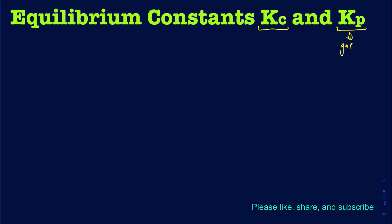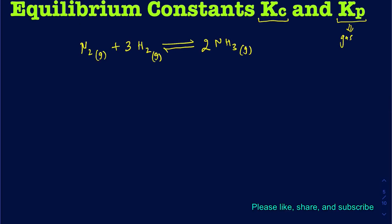Let me take a simple example. If I have nitrogen gas reacting with hydrogen gas, and then it sets up an equilibrium with ammonia, all of these phases are going to be in the gas form. When I balance this, we're going to have three in front of H2 and two in front of NH3. I can express this equation in the form of Kc and Kp, because I have gases in both reactants and products.